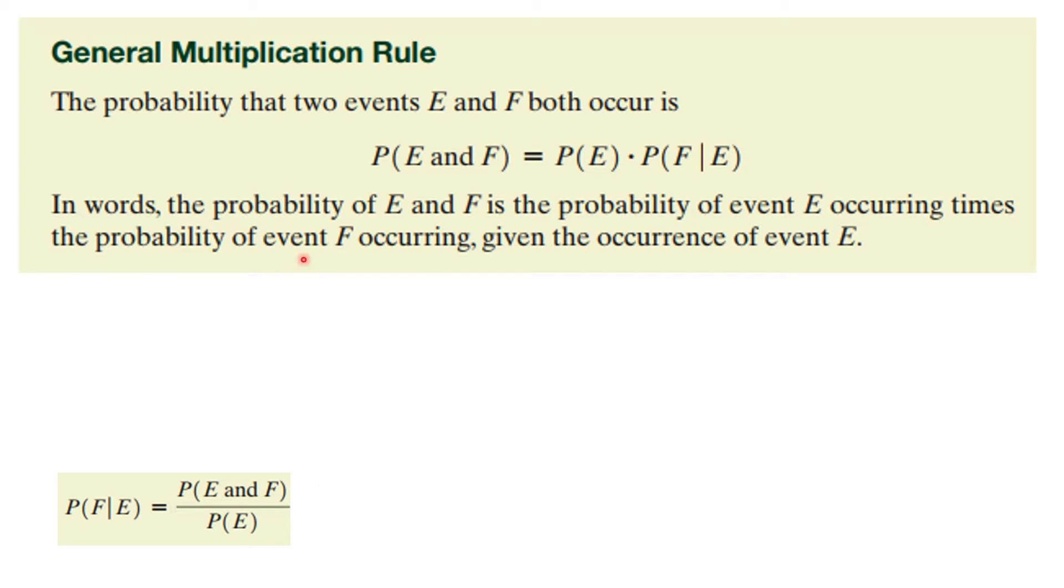But this is the general rule that given any two events, the probability that two events E and F both occur is the probability of E and F is the probability of E times the probability of F given E. And you see, it's just an algebra thing. In other words, the probability of E and F is the probability of event E occurring times the probability of event F occurring given the occurrence of event E.